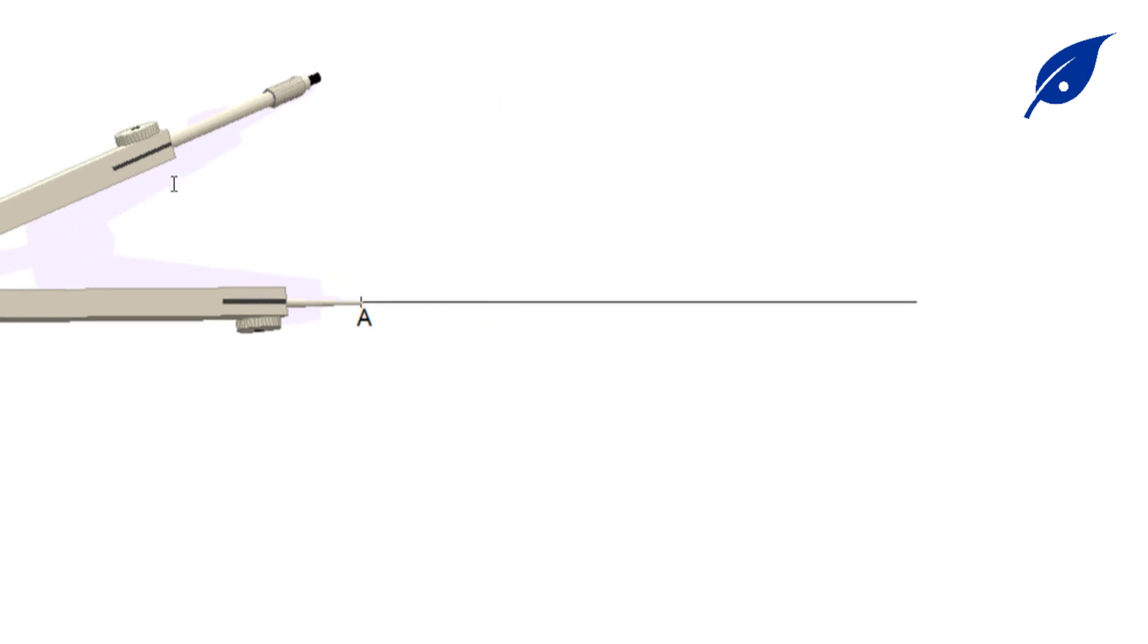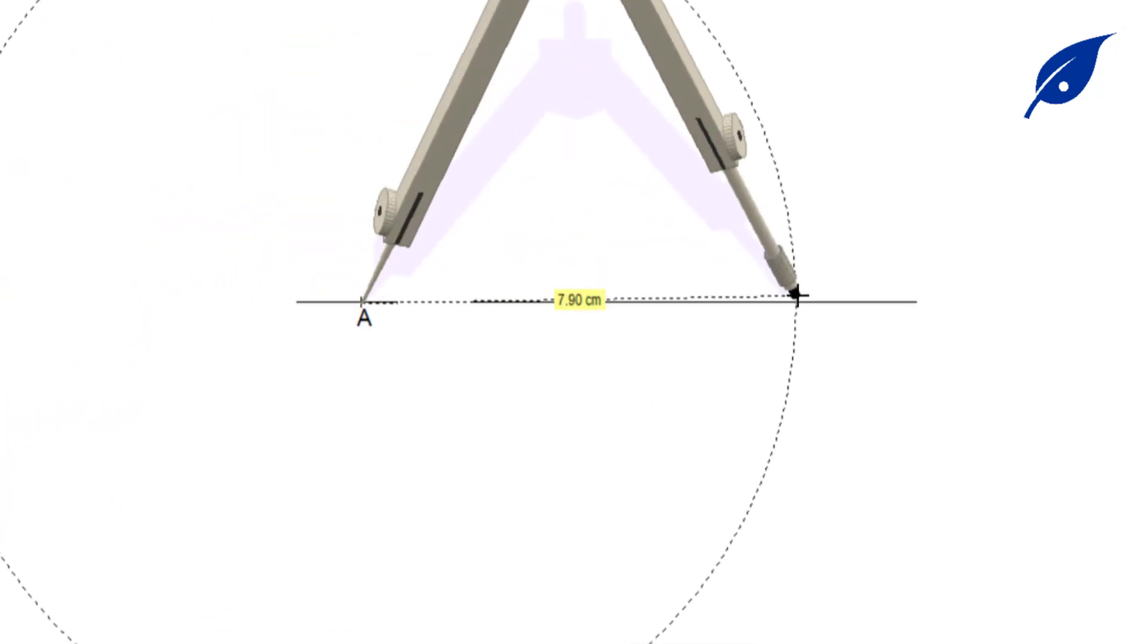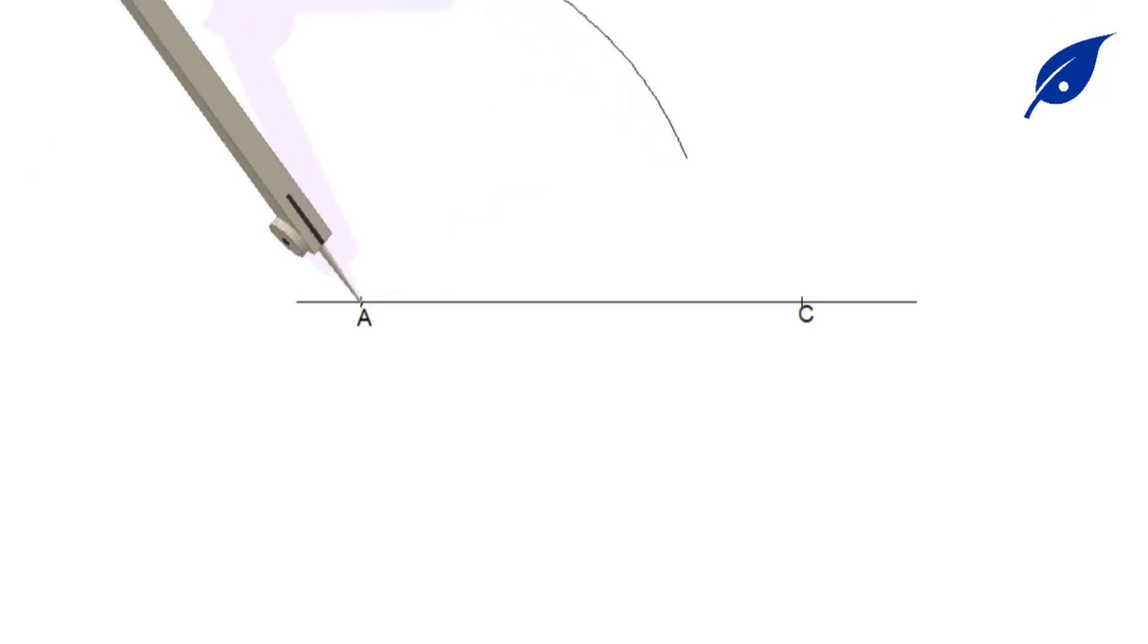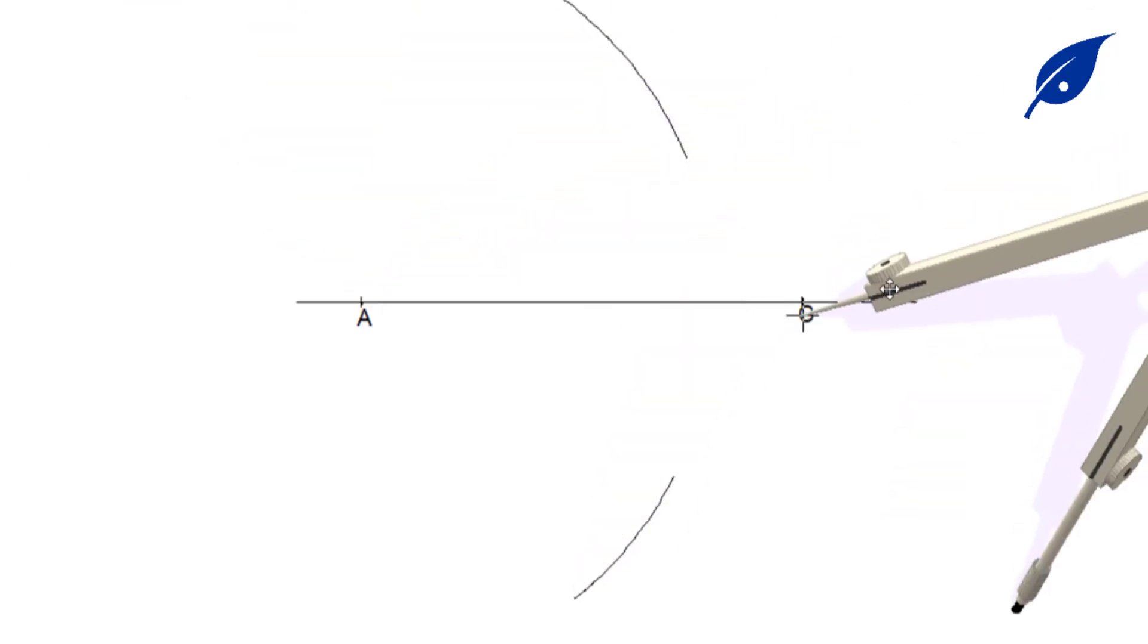The point where we mark, we'll label it C. So AC is the diagonal of the square. At this point, we'll bisect the line AC to give us point O.